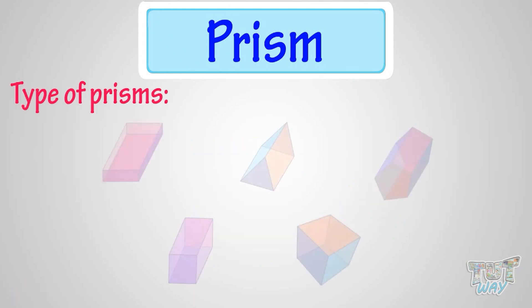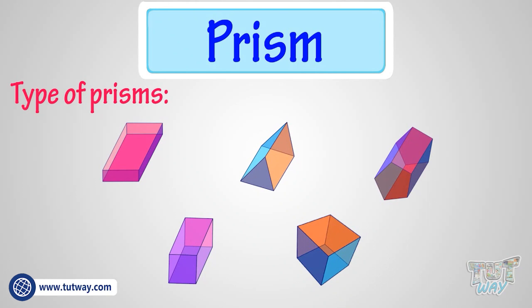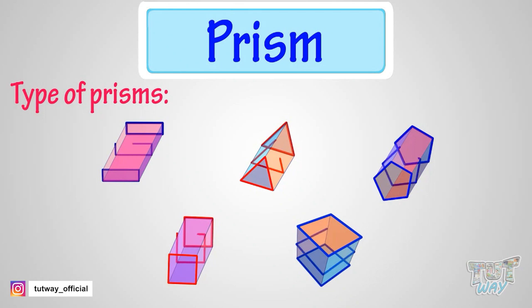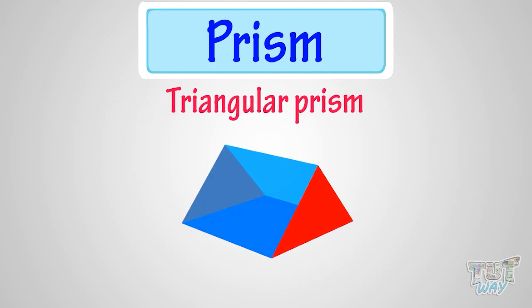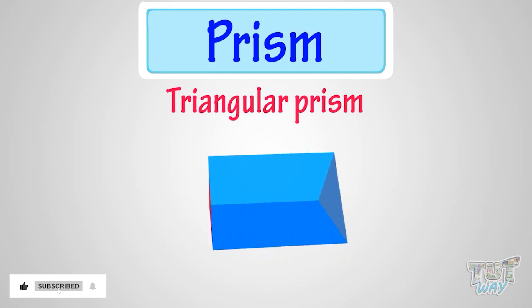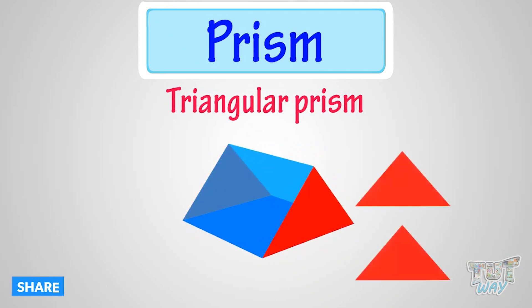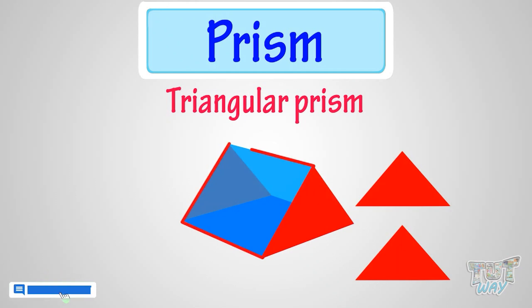There are many types of prisms, depending upon the shape of its top and bottom faces, or its cross-section. The first one is the triangular prism.